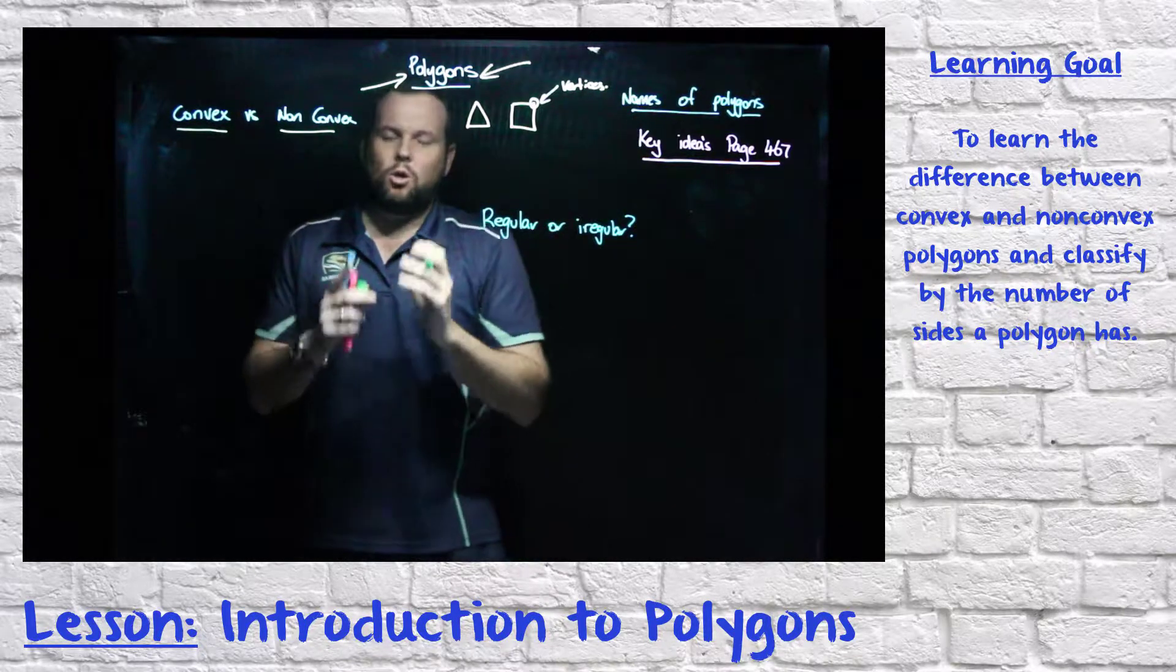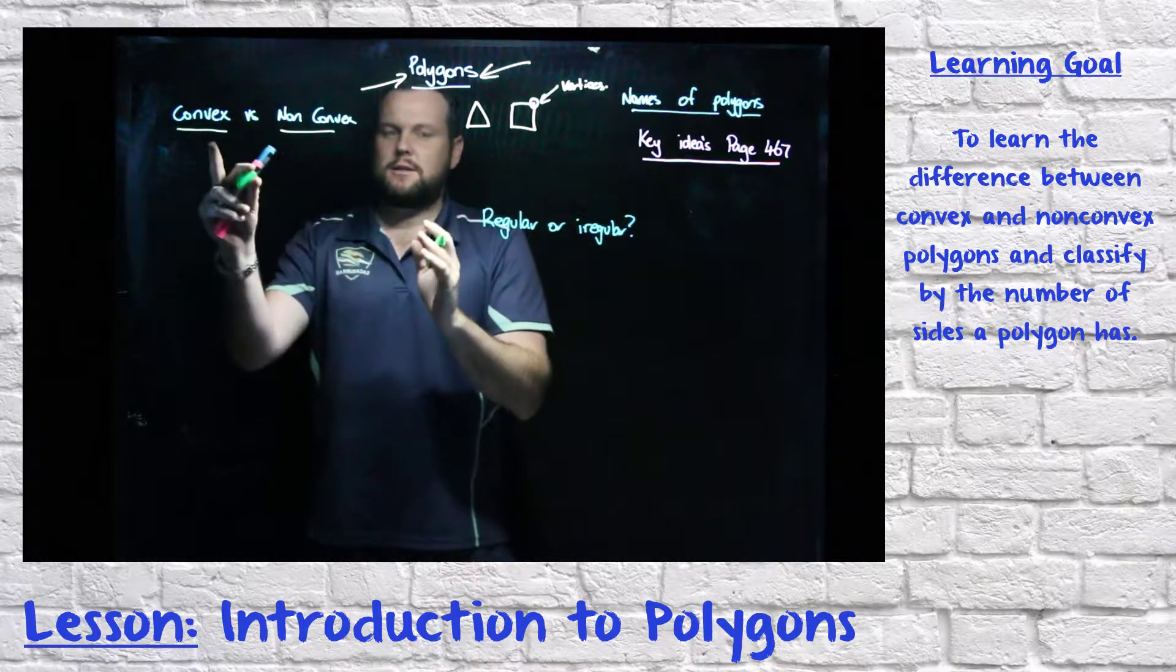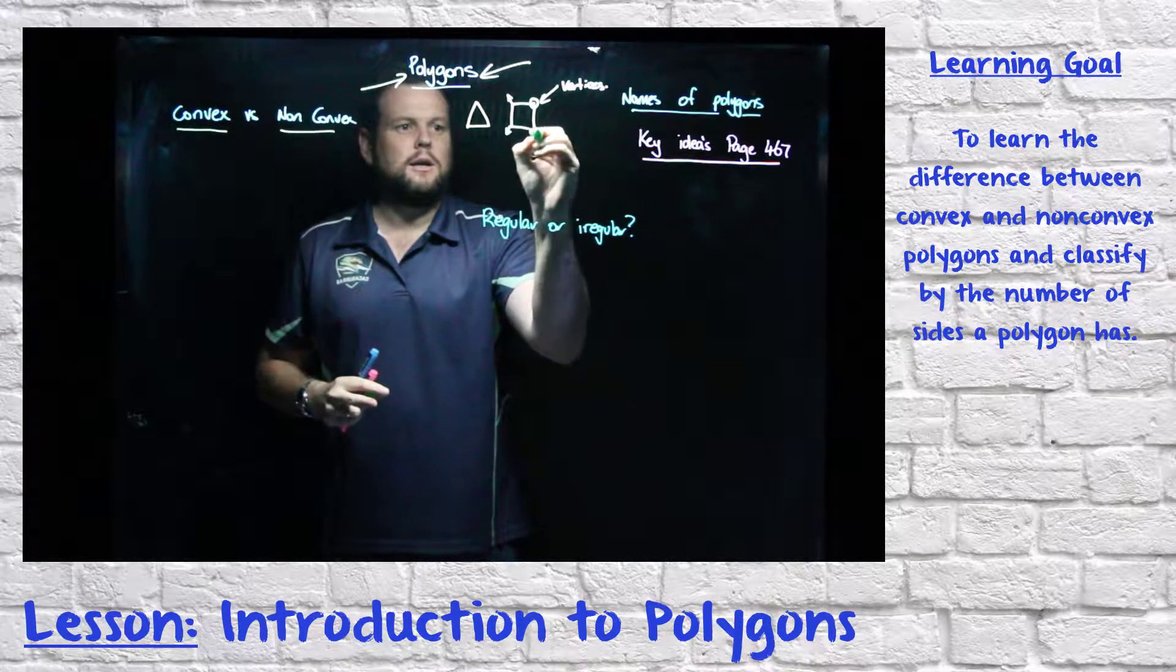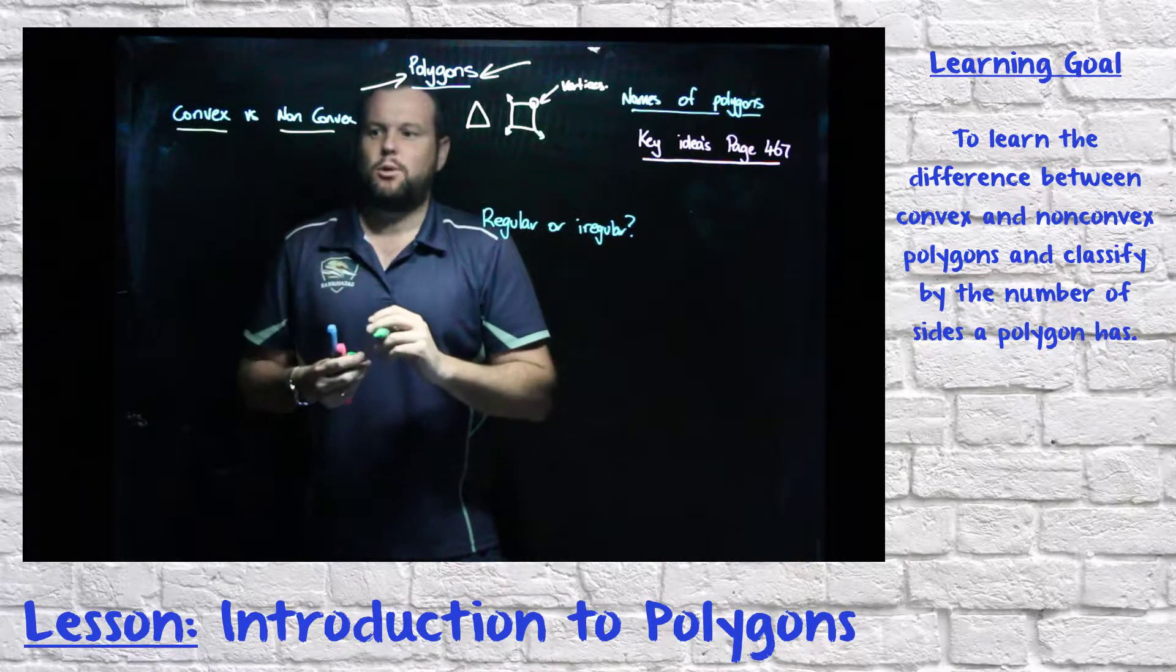When we look at vertices, a polygon will be convex if all of the vertices are pointing out. So a square is a convex shape, all of the vertices are pointing out.